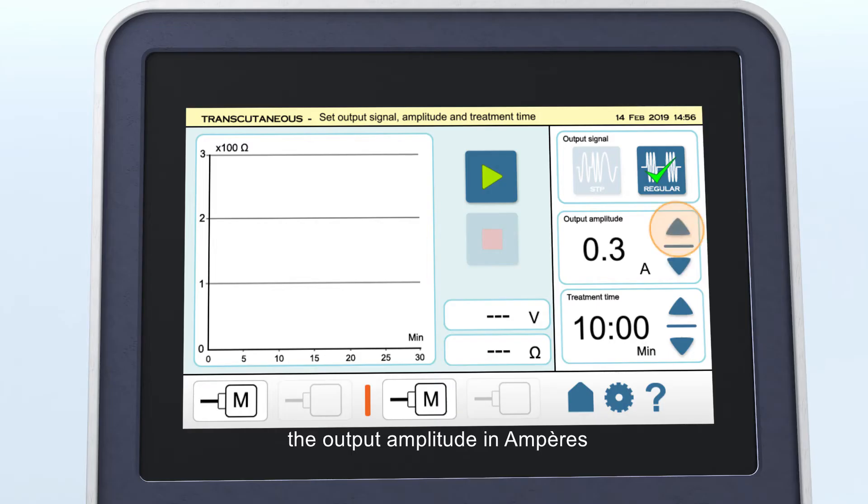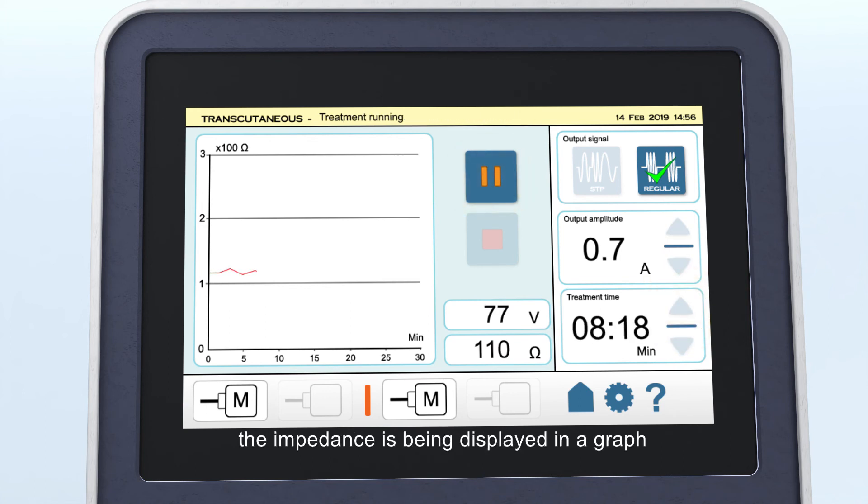The output amplitude and the treatment time can be set. During the treatment, the impedance is being displayed in a graph and the treatment can be paused.